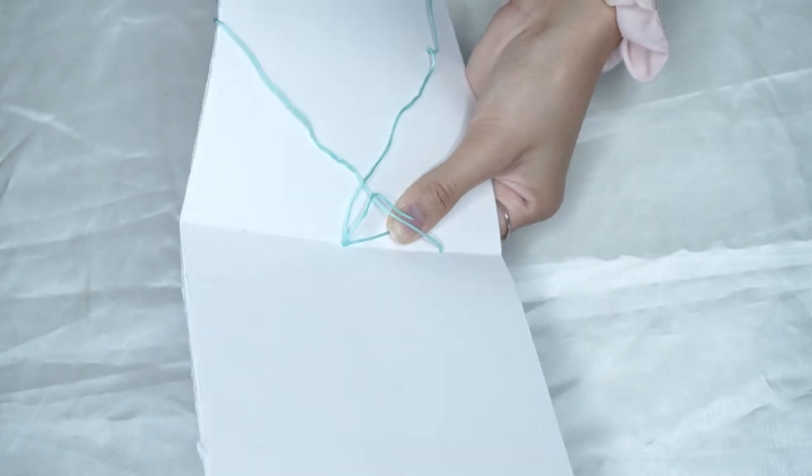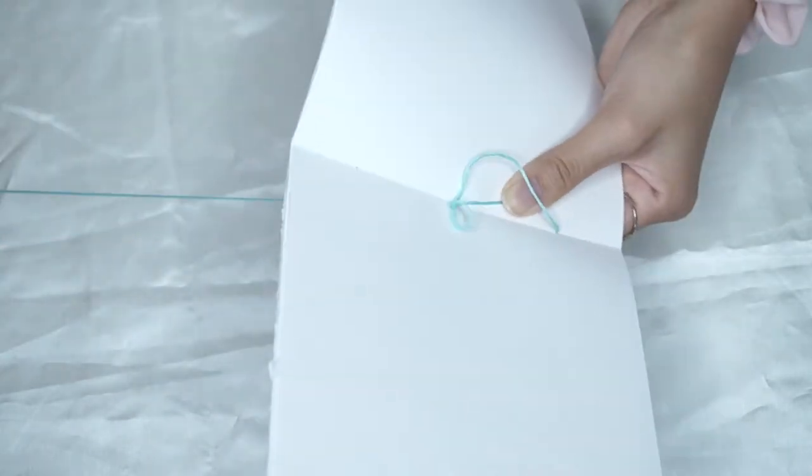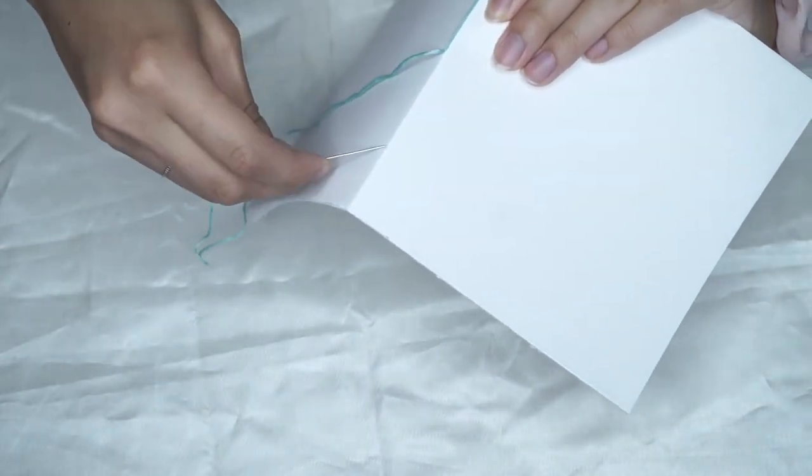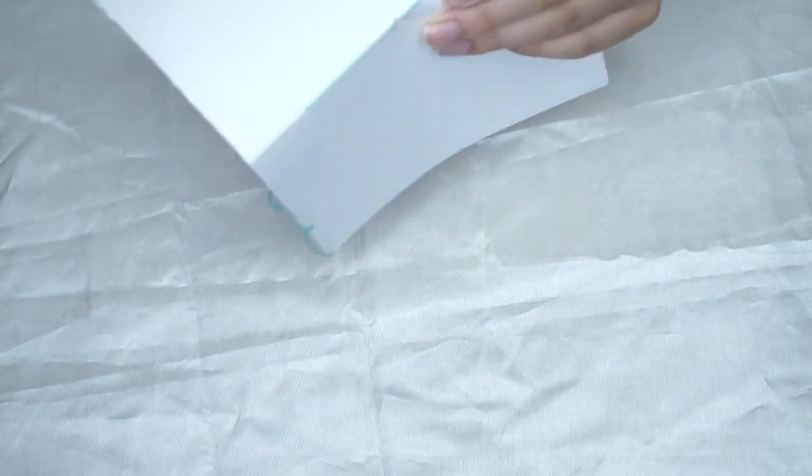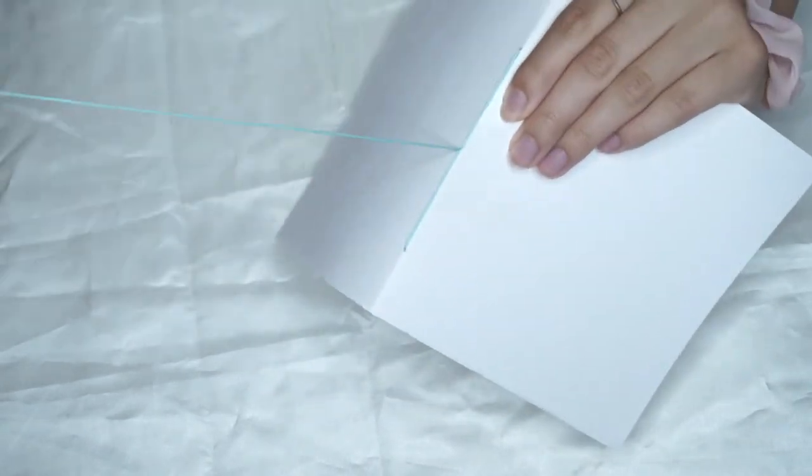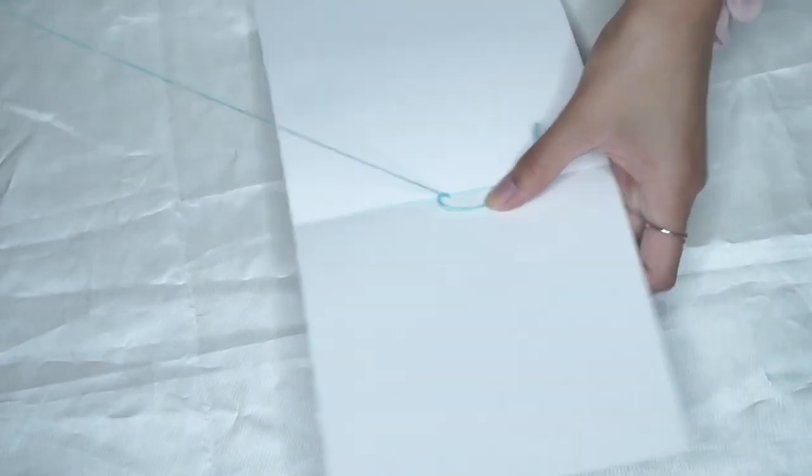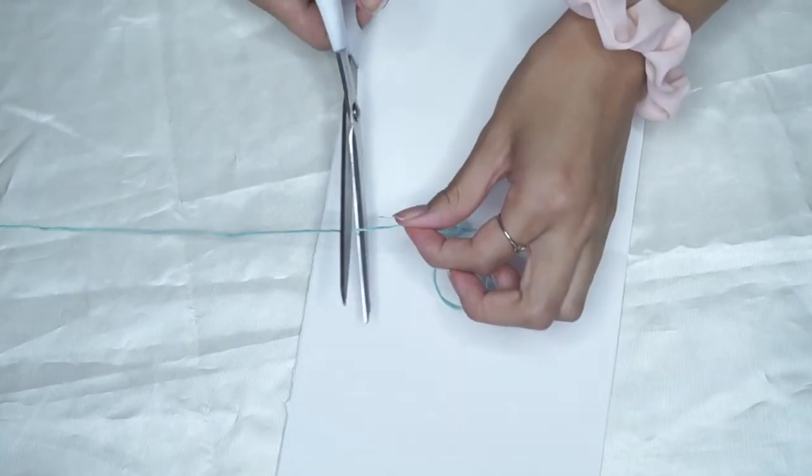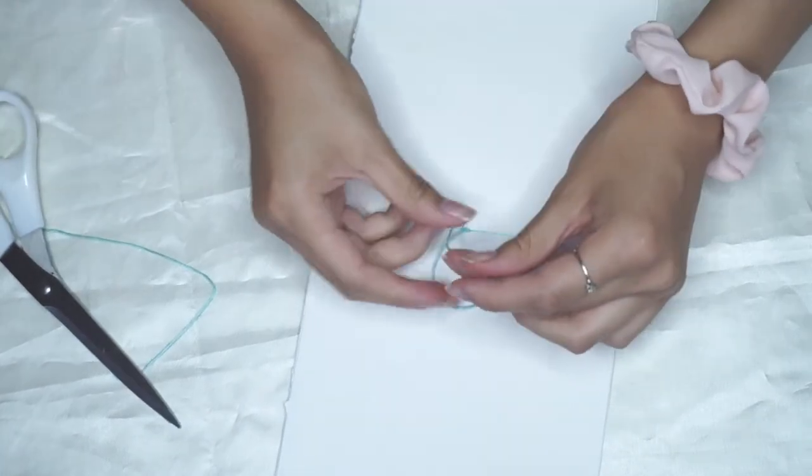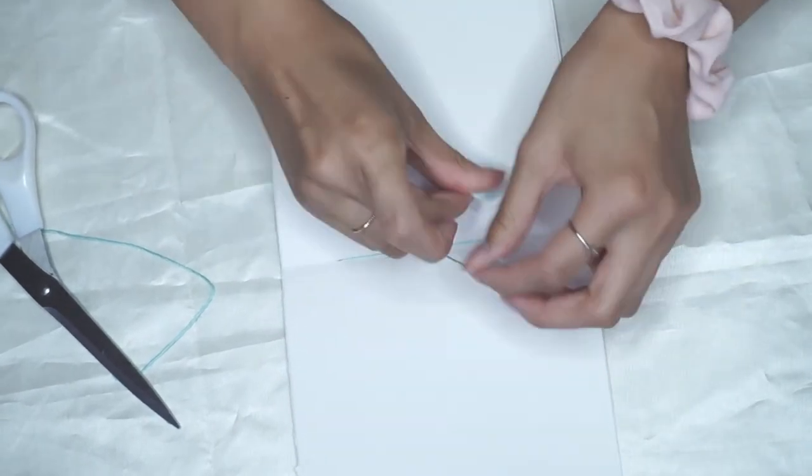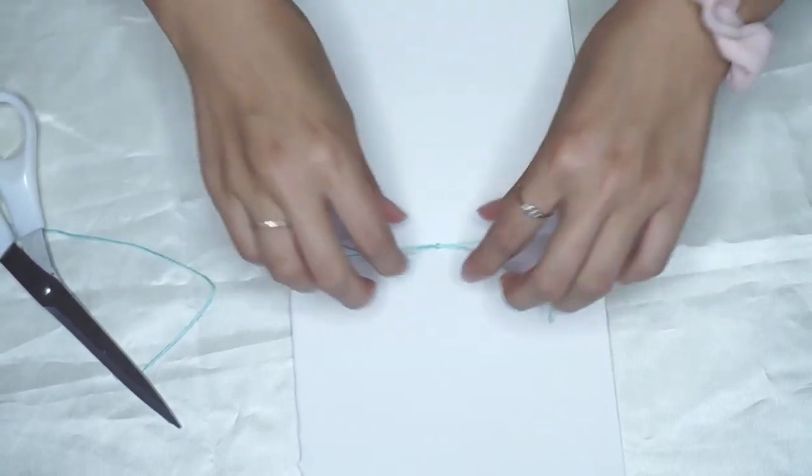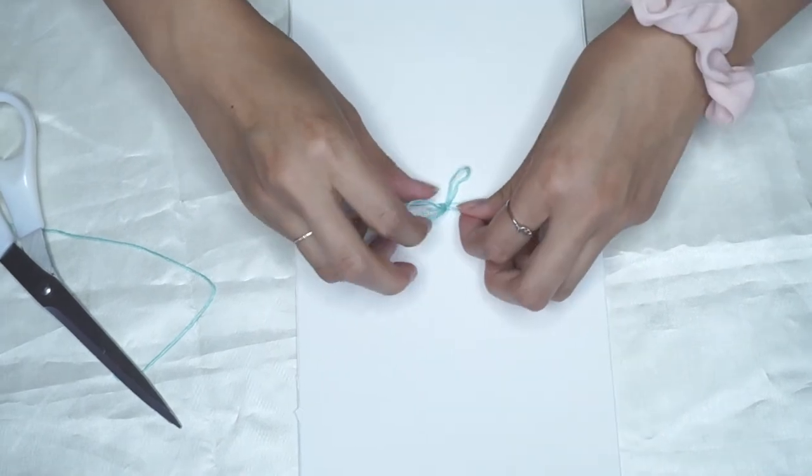Once you finish threading through all the holes, just go back to the middle hole and cut off the thread. Then tie it into a double knot. I just made a little bow just so that it's a bit cute, and yeah, you're done.